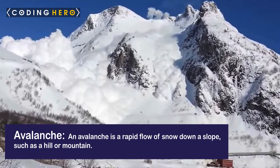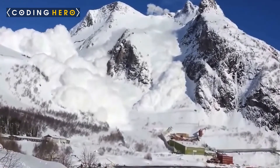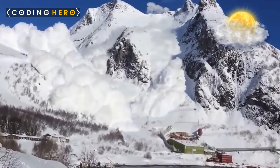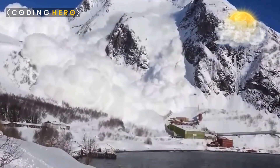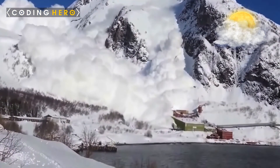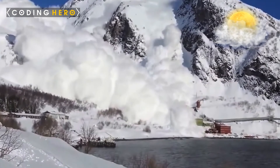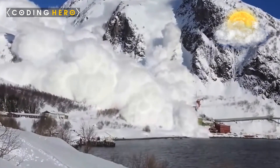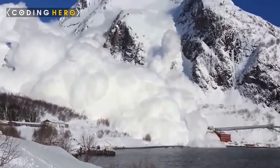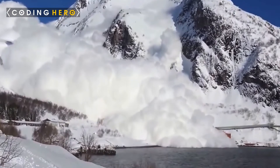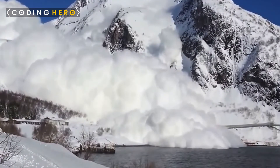Avalanche. An avalanche is a rapid flow of snow down a slope such as a hill or mountain, and has the capability to capture and move ice, rocks and trees. Avalanches are set off due to increased precipitation or snowpack weakening, or by external means such as humans, animals and earthquakes.